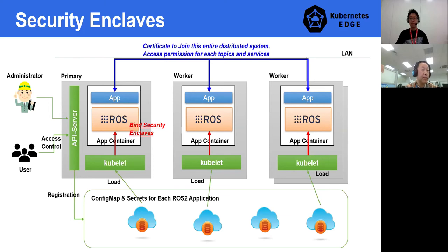Application ports can be agnostic from this binding by Kubernetes, but just use security enclaves to participate in the distributed system and access data objects. Once pods are shut down, security enclaves will be gone too. We have confirmed that everything works correctly with these security features.